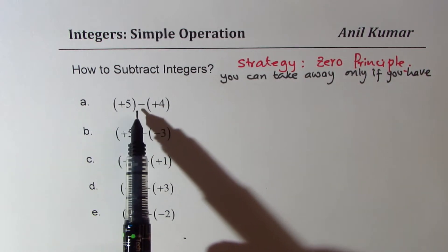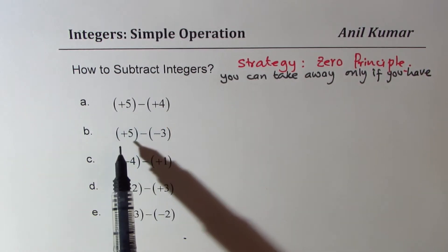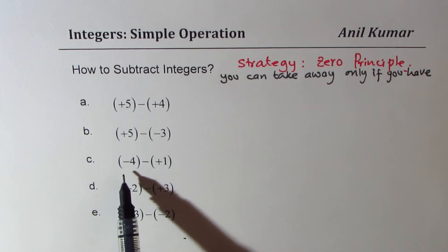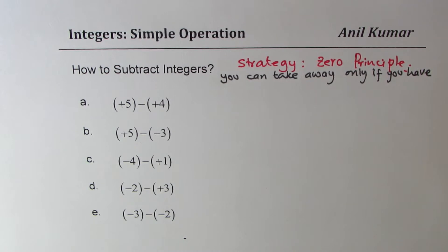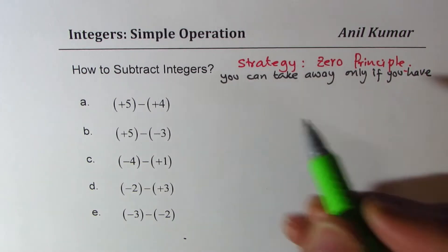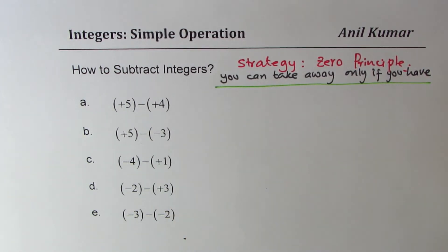We'll do plus 5 minus plus 4, plus 5 minus minus 3, minus 4 minus plus 1, and things like that. Applying this zero principle, we'll see how to do subtraction for integers.